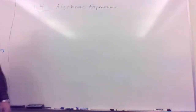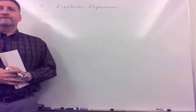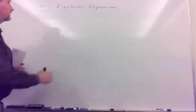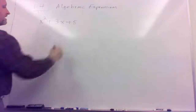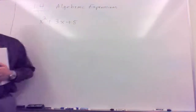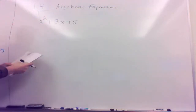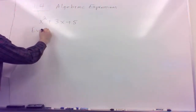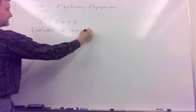In algebra, what that really entails is letting letters represent numbers. For example, the expression x squared plus 3x plus 5 — we're letting x play the role of numbers, and so therefore we can substitute numbers as we see fit and evaluate that expression. Let's say we want to evaluate that expression at x equals negative 2.